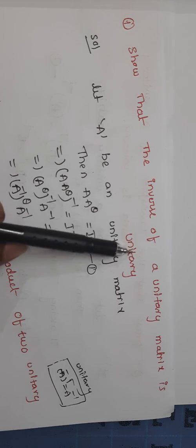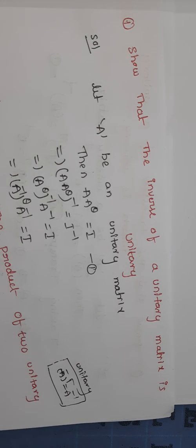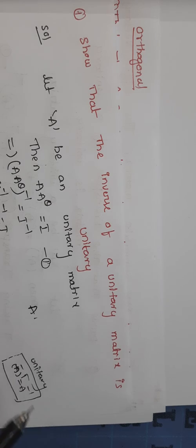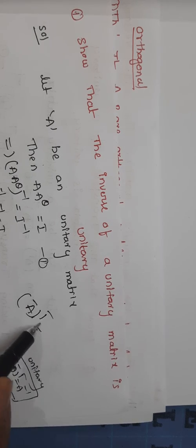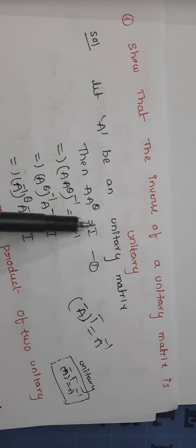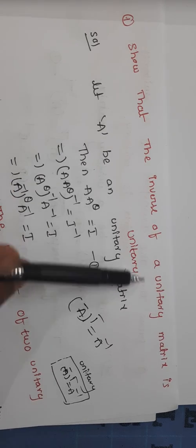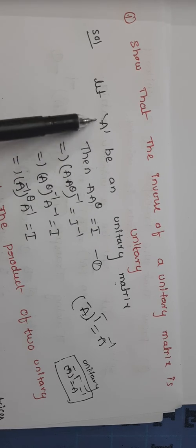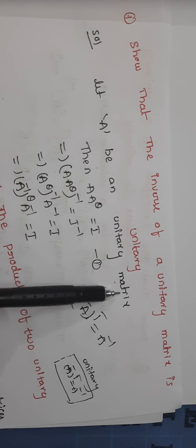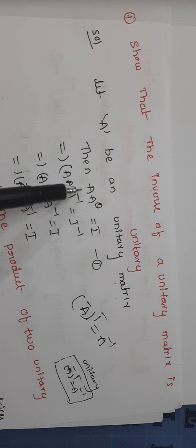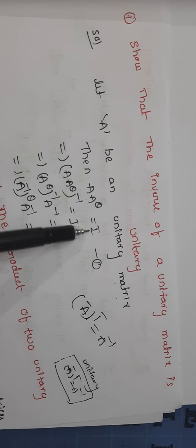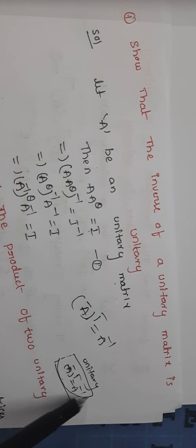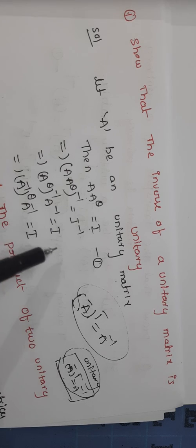Show that the inverse of a unitary matrix is unitary. Actual unitary matrix ente? The inverse of a unitary matrix is unitary. Suppose A be a unitary matrix. In this unitary matrix, A A^θ is equal to I. And this is an orthogonal. A A transpose, A transpose A is equal to I.